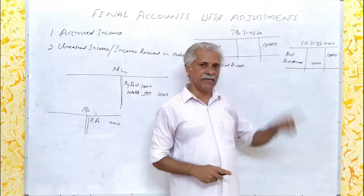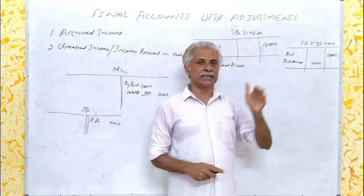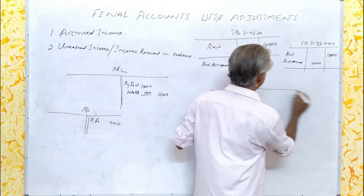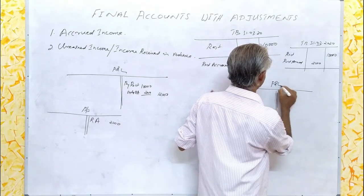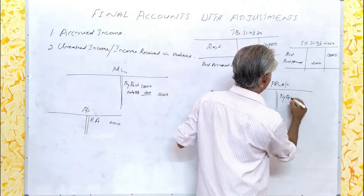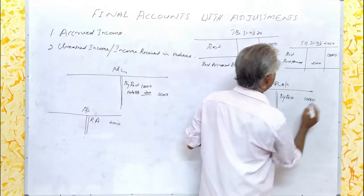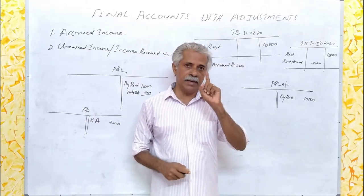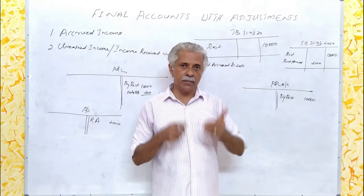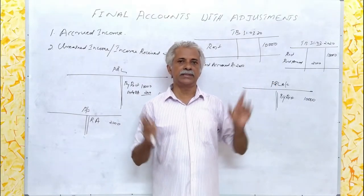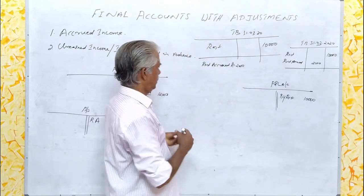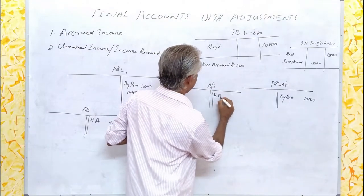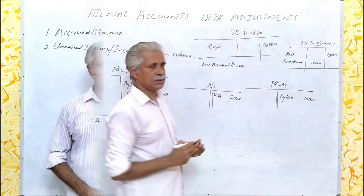Instead, the rent which is given in the trial balance as it is can be taken in the P&L account as an income — that is, P&L account by rent rupees 10,000. Rent received appeared in the trial balance should be taken only at one place in the final accounts. That is the amount due from others, so it is an asset. It will appear on the asset side of the balance sheet — rent accrued rupees 2,000.